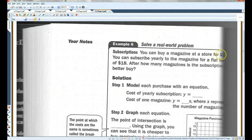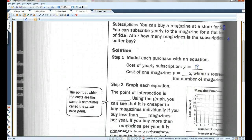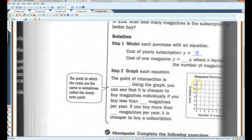You can buy a magazine at a store for $3. You can subscribe yearly to the magazine for a flat fee of $18. After how many magazines is the subscription a better buy? There's an A over here. That's the subscription, A, better buy. Okay. Model each purchase with an equation. Cost of yearly subscription. y equals 18. Okay. I'm just going to go ahead and graph this. y equals 18. Looks like this. Straight line across 18. The cost of one magazine. y equals 3x. Because every magazine costs $3.